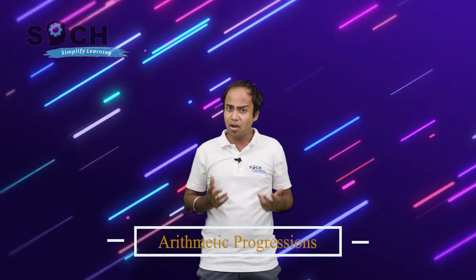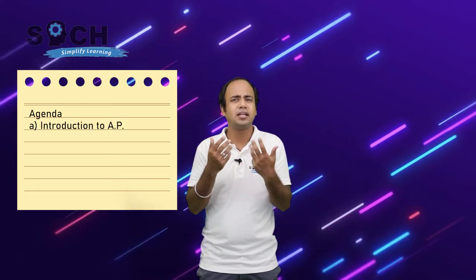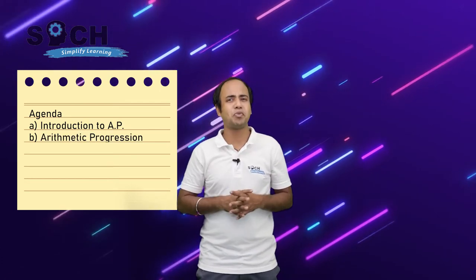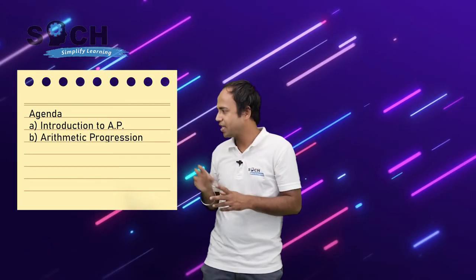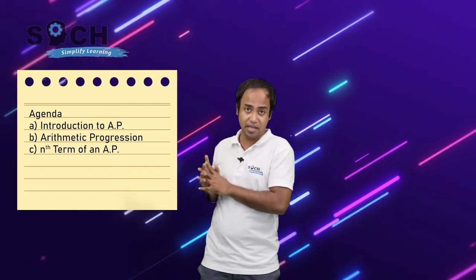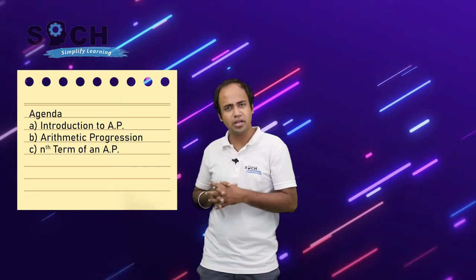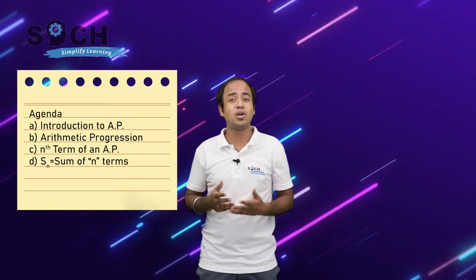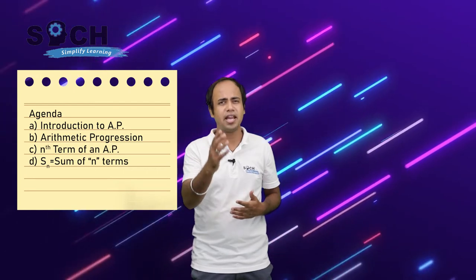Let's check out the agenda for this chapter. A is introduction — how did A.P. come into picture. B is Arithmetic Progression itself, that is A.P. C is another term of an A.P., and D is S-sub-N, which is equal to the sum of N terms in an A.P.